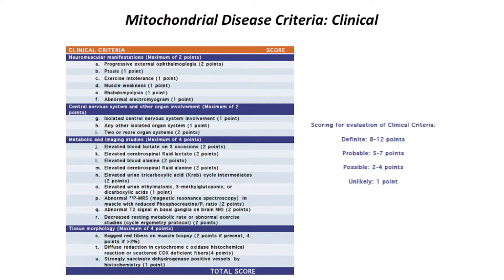I've listed these out over the next few slides mainly to give you a sense of how complicated it is. For example, compared to a lot of other disorders where a single blood test or an x-ray might be all that's needed to make a diagnosis, for mitochondrial disease there's a rather complex scoring system that takes into account many clinical, biochemical, and genetic factors.